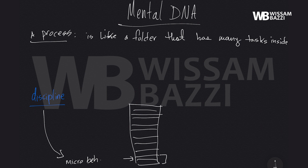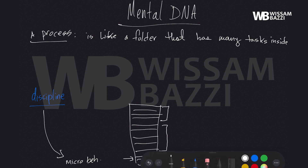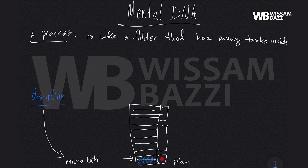There's the beginning of the folder, the middle of the folder, and the end of the folder — the beginning, middle, and end of a process. Some of us don't prep enough, so we don't plan. We go to make a cake but we don't have all the ingredients. That's where some people make mistakes in the initial steps of a process.